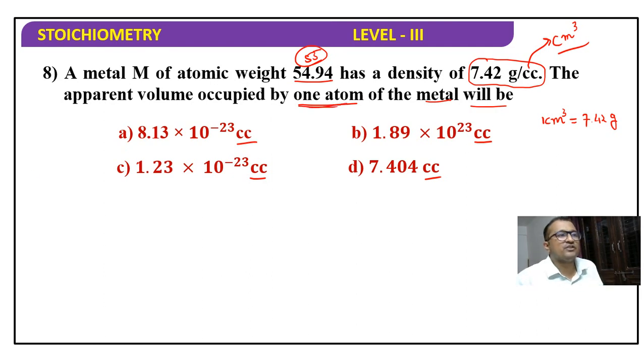You have to find out for one atom, so first find out one atom's mass. One atom's mass will be 55 divided by 6.022 into 10 raise to 23. If we take this many atoms, its mass will be one mole, and one mole's mass equals its atomic mass, that will be 55 grams. So one atom's mass will be 55 divided by 6.022 into 10 raise to 23.